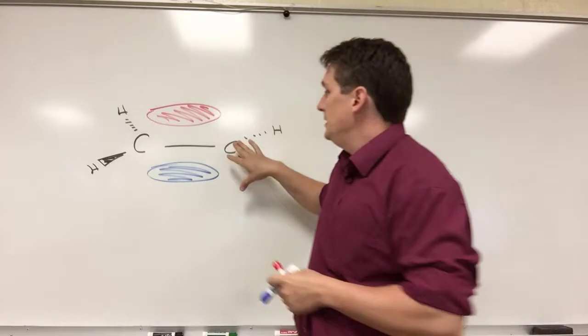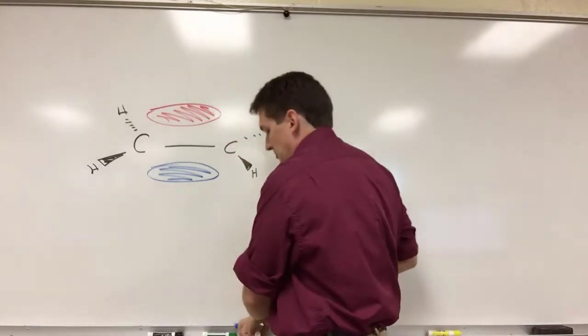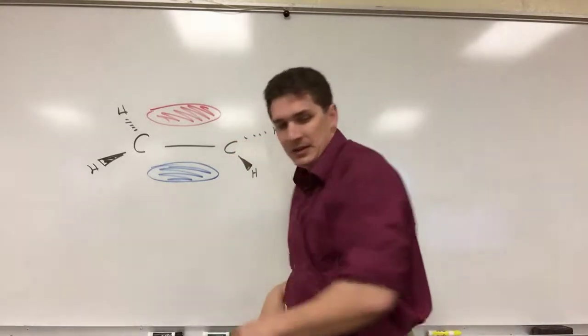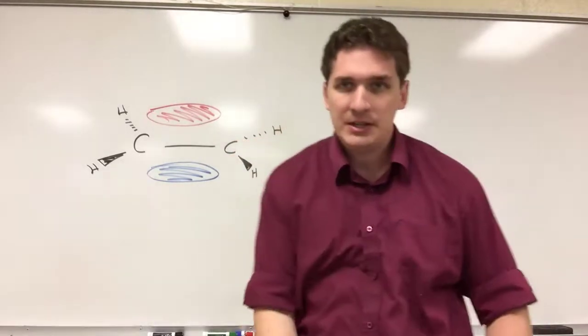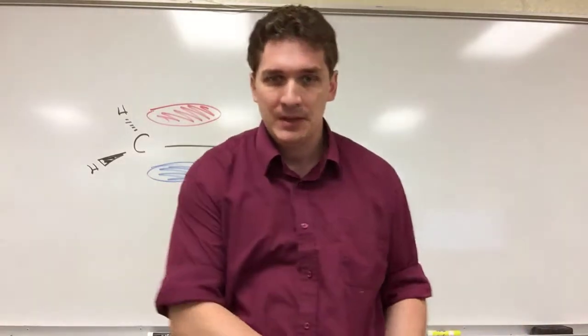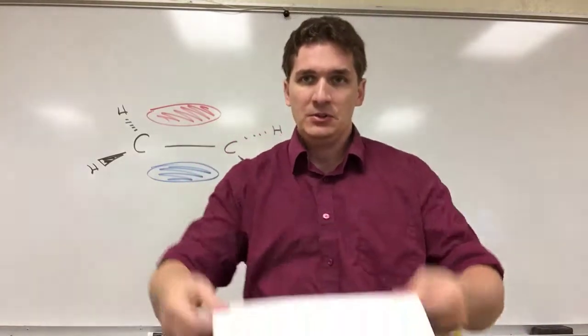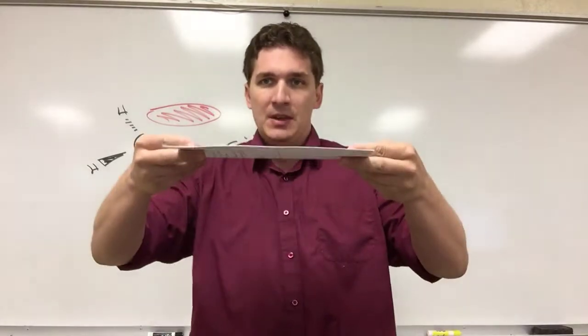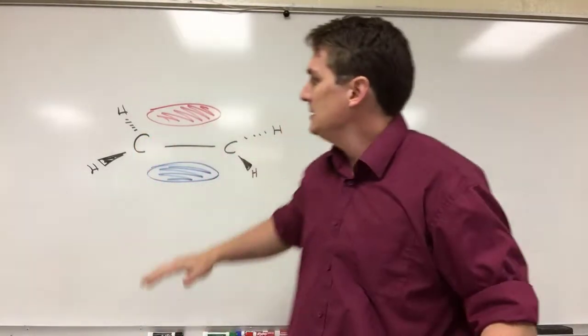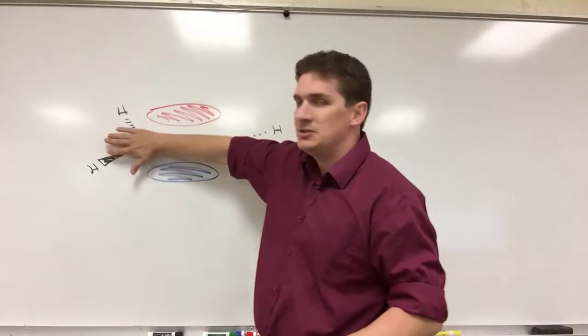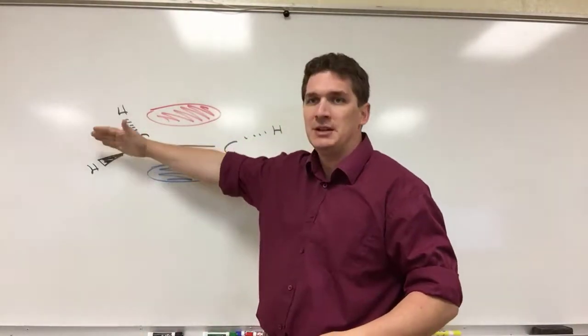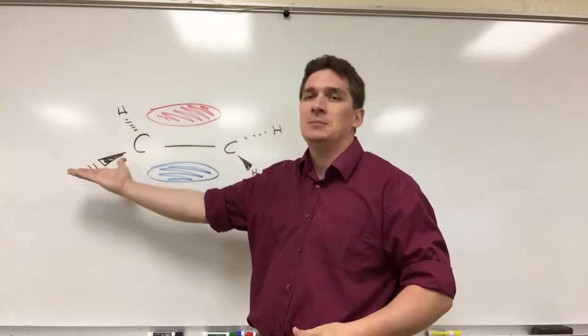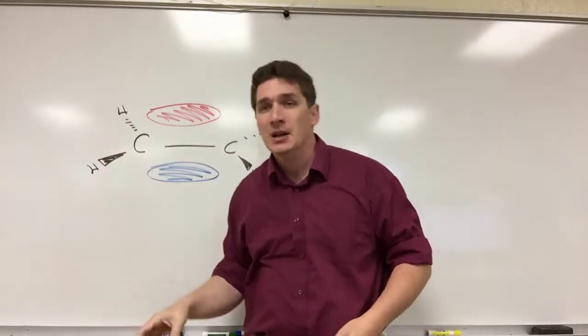These CH2 groups, if you look at them, they look just sort of like a sheet of paper. So the whole molecule looks straight. What's to keep it from rotating? What's to keep these hydrogens from rotating 180 degrees and flipping to the side?